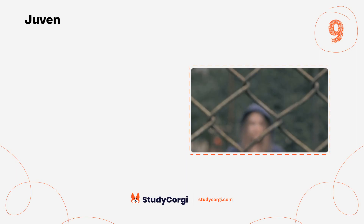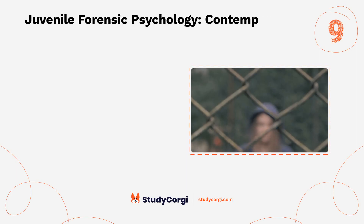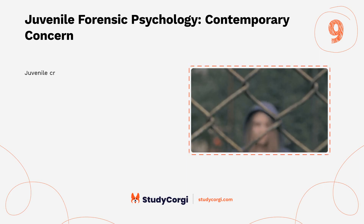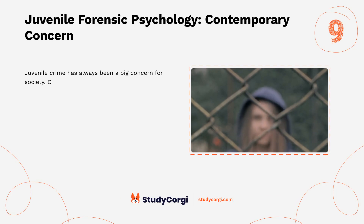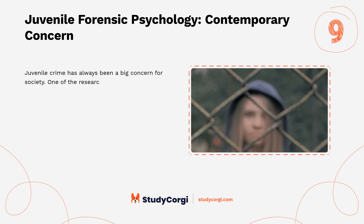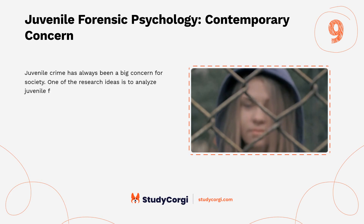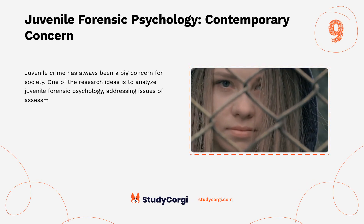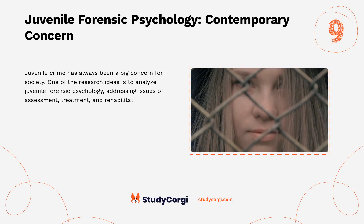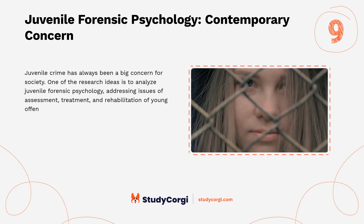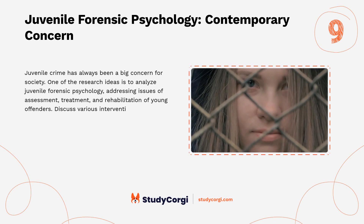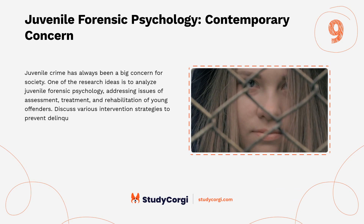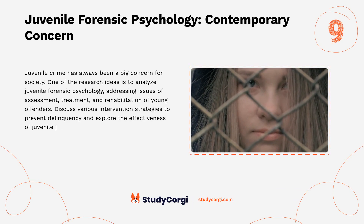Juvenile forensic psychology — contemporary concern: juvenile crime has always been a big concern for society. One of the research ideas is to analyze juvenile forensic psychology, addressing issues of assessment, treatment, and rehabilitation of young offenders. Discuss various intervention strategies to prevent delinquency and explore the effectiveness of juvenile justice programs.